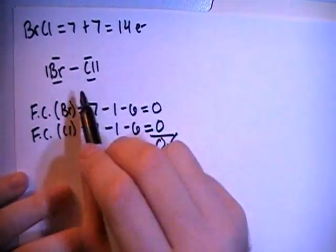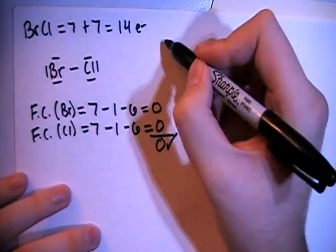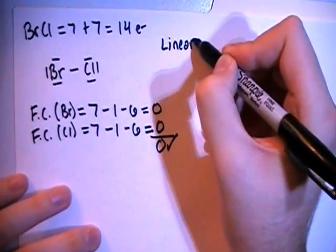In terms of shape, with just having the two atoms, that's going to make this a linear shape.